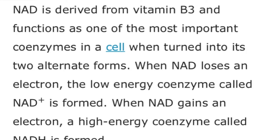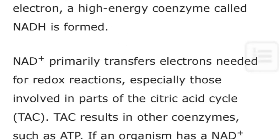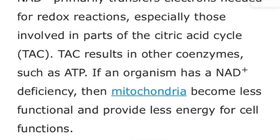When NAD loses an electron, the low-energy coenzyme called NAD+ is formed. When NAD gains an electron, a high-energy coenzyme called NADH is formed. It transfers electrons needed for redox reactions, especially those involved in parts of the citric acid cycle. This is how the coenzyme vitamin NAD basically works.